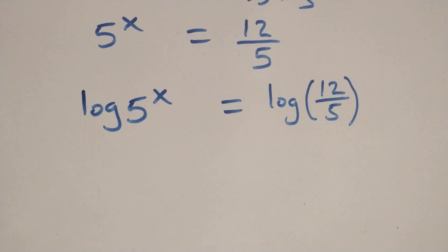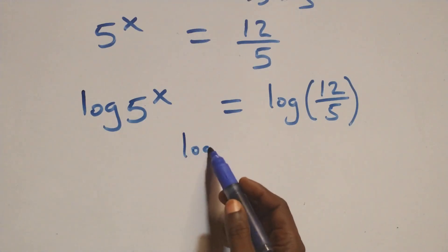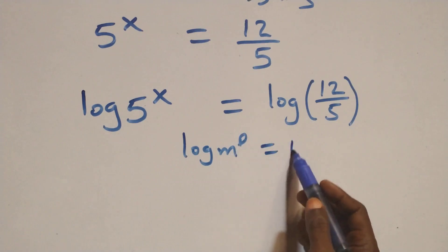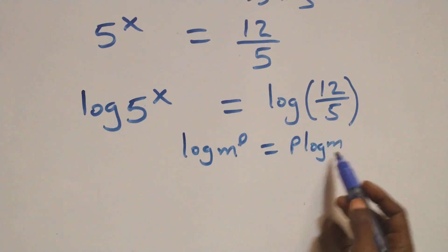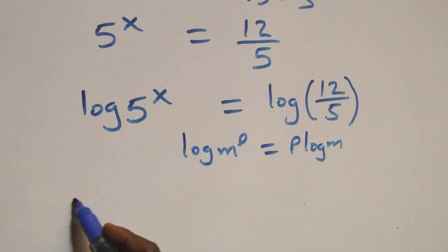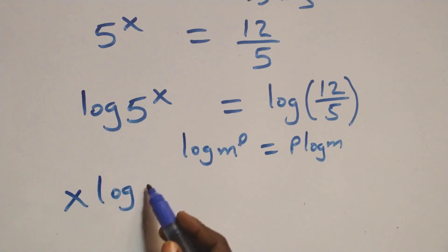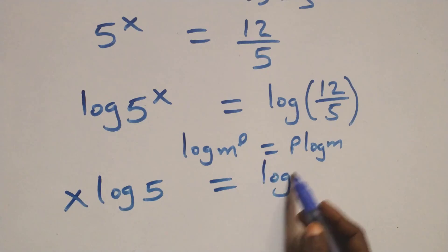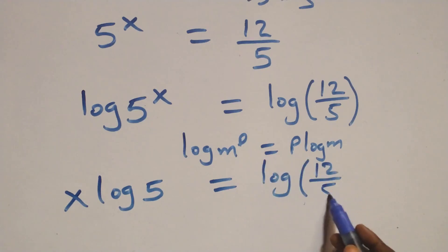In the next step, we apply the power rule of logarithms: log of n raised to power p is the same thing as p times log n. Applying this, x times log 5 equals log of 12 over 5.